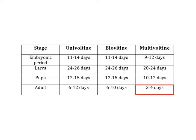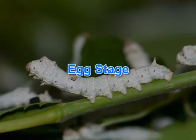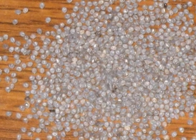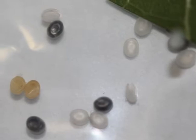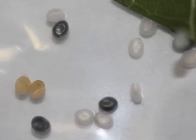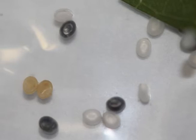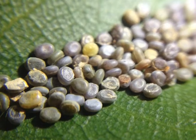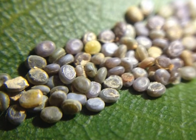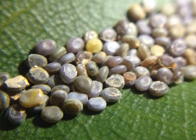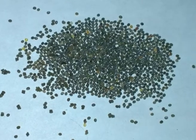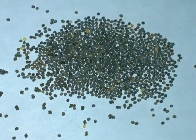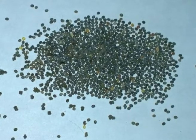Next we will see the egg stage. The silkworm eggs are tiny, weighing around 2000 eggs to a gram. It measures 1 to 1.3 mm in length and 0.9 to 1.2 mm in width. The weight of a single egg is about 0.5 to 0.6 milligram. The size, weight, shape, and color of the egg, and the number of eggs per laying vary among different races and according to season.